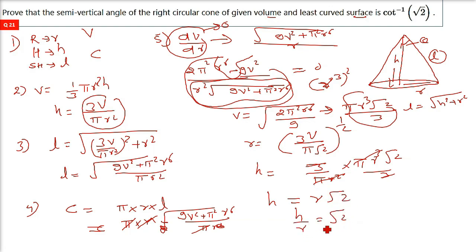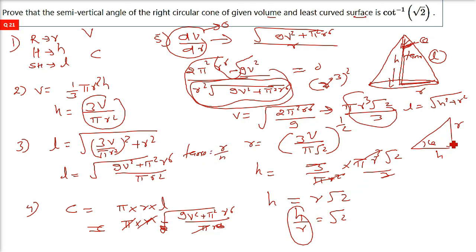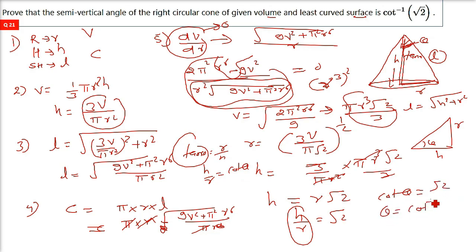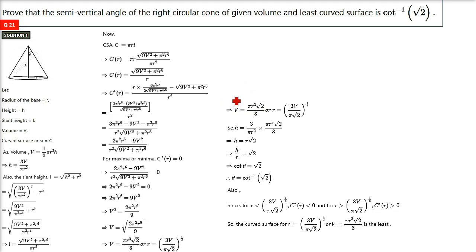So h/r = √2. Now if tan θ = r/h (perpendicular over base for the semi-vertical angle θ), then cot θ = h/r = √2. So θ = cot⁻¹(√2). That is what we were expecting and we got it. You still have to double differentiate d²C/dr² and show it is positive to confirm minimum curved surface. The main key is making the expression — once you make the expression, differentiation and equating to zero are quite easy.